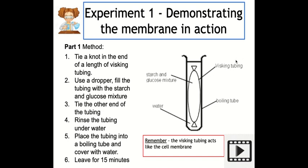You can see the visking tubing labelled in the diagram. It's a clear material, like a kind of plastic bag, with really tiny holes in it — mimicking a normal cell membrane with its pores. The visking tubing bag represents the cell membrane. To set up the experiment, one end of the tubing is tied and a pipette is used to fill the tube with a mixture of starch and glucose. The other end is then tied and the bag is rinsed under a tap to remove any excess glucose or starch from the outside — a really important step, as any residue could affect the final results.